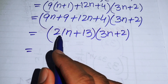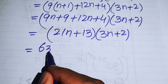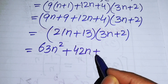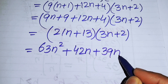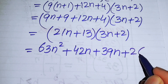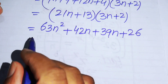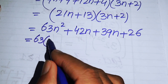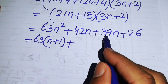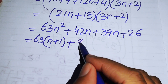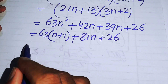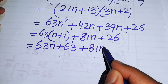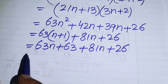Multiplying out (21n + 13)(3n + 2): 21n · 3n = 63n², 21n · 2 = 42n, 13 · 3n = 39n, 13 · 2 = 26. This gives 63n² + 42n + 39n + 26. Substituting n² = n + 1: 63(n + 1) + 81n + 26 = 63n + 63 + 81n + 26.